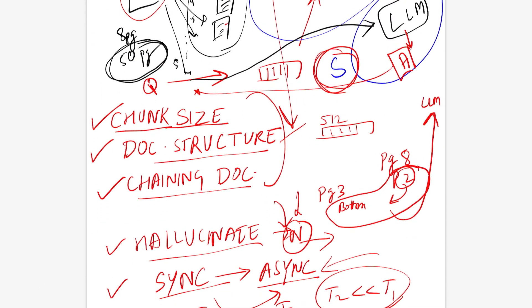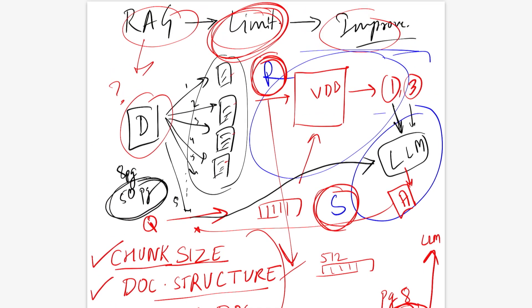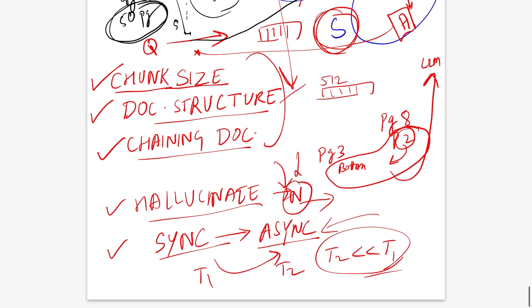It seems like we've talked a lot, so let's move on to the last part, which is improvements. Clearly, whatever the limitations are, there are improvements that you can do, but I'll just talk about one thing that is really important, which is chaining documents.